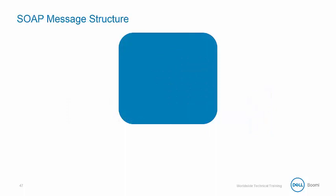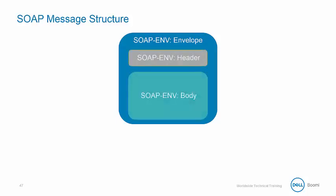Although the request and response SOAP message will be unique based on the information sent and received from various web services, the overall message structure is the same. Each SOAP message will contain a required envelope that acts like a wrapper around the request or response main contents. Within an envelope, a message normally contains a header and a body. The optional header element contains application-specific information like authentication, payment, and so on about the SOAP message.